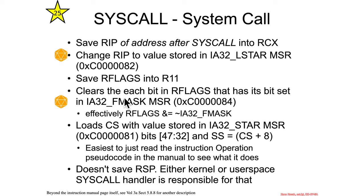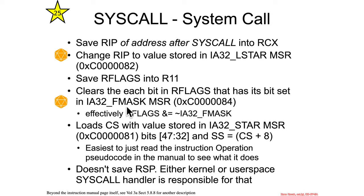So it's not just ANDing, it's not just ORing — it's more like you take IA32_Fmask, invert it so every one becomes a zero and every zero becomes one, and then you AND the RFlags with the inverted value, so that it essentially clears all the bits that were said to be cleared in the Fmask.